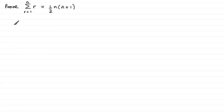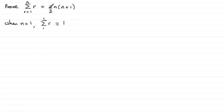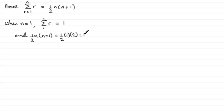To do proofs like this, we need to show it's true when n equals 1. Taking the left hand side when n equals 1, we have Sigma of r going from r equals 1 to 1, which is just 1. For the right hand side, we have a half of n times n plus 1, which gives us half of 1 times 2, which equals 1. So both sides equal 1.